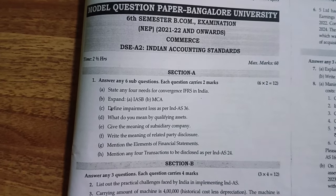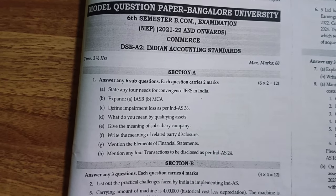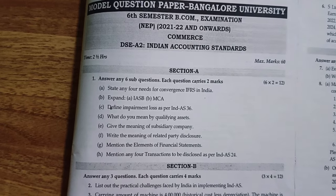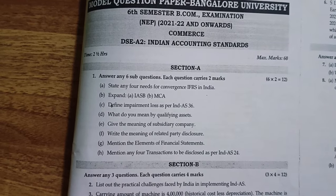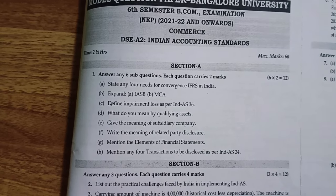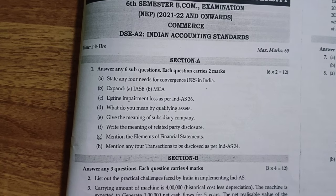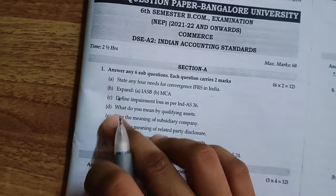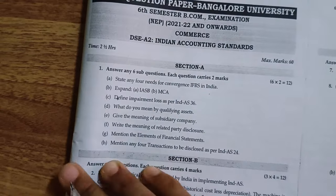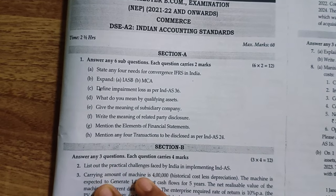Hi friends, in this video let us see the model question paper of Indian Accounting Standards. The paper has three sections: Section A, Section B, and Section C. Section A is 2 marks, Section B is 4 marks, and Section C is 12 marks. This is a 60-mark question paper with a time limit of 2 hours.